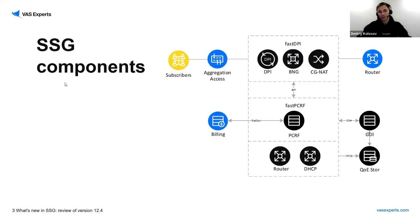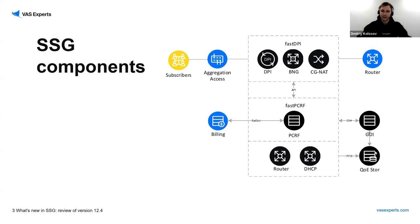Let me remind you of the components SSG consists of. We have two main engines: FastDPI, which consists of DPI, BNG, and CGNet models; and FastPCRF, which is the proxy for communication through the RADIUS protocol with B-Link. We also have a software router, a DHCP server, a graphic user interface, and a quality of experience analytics store for traffic analysis.